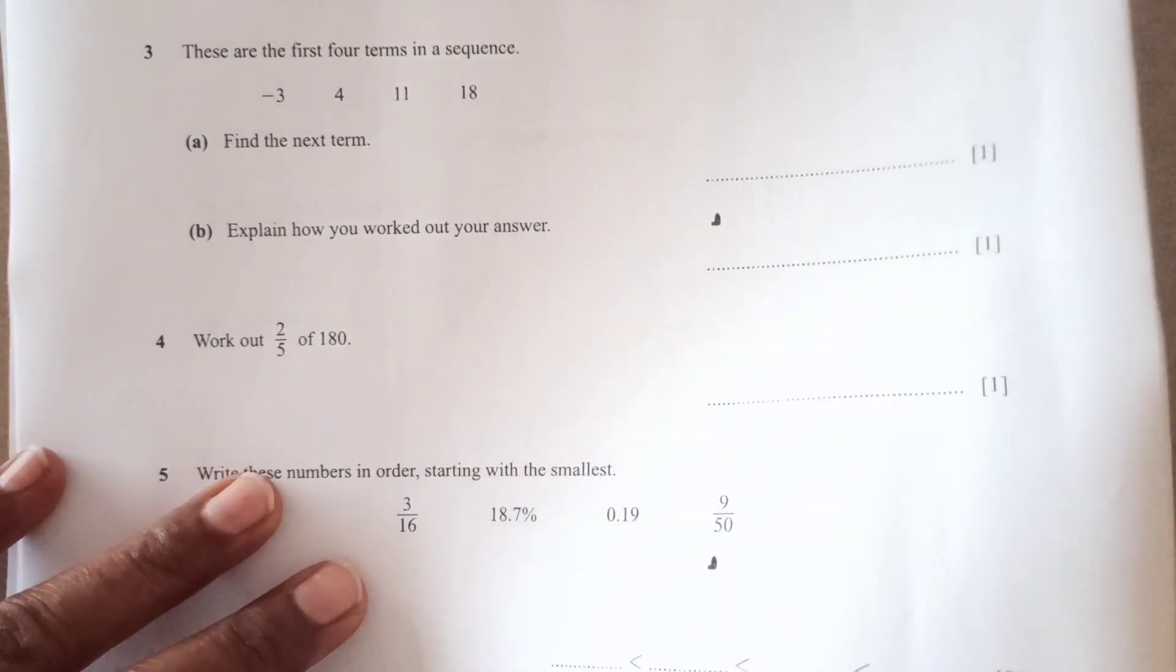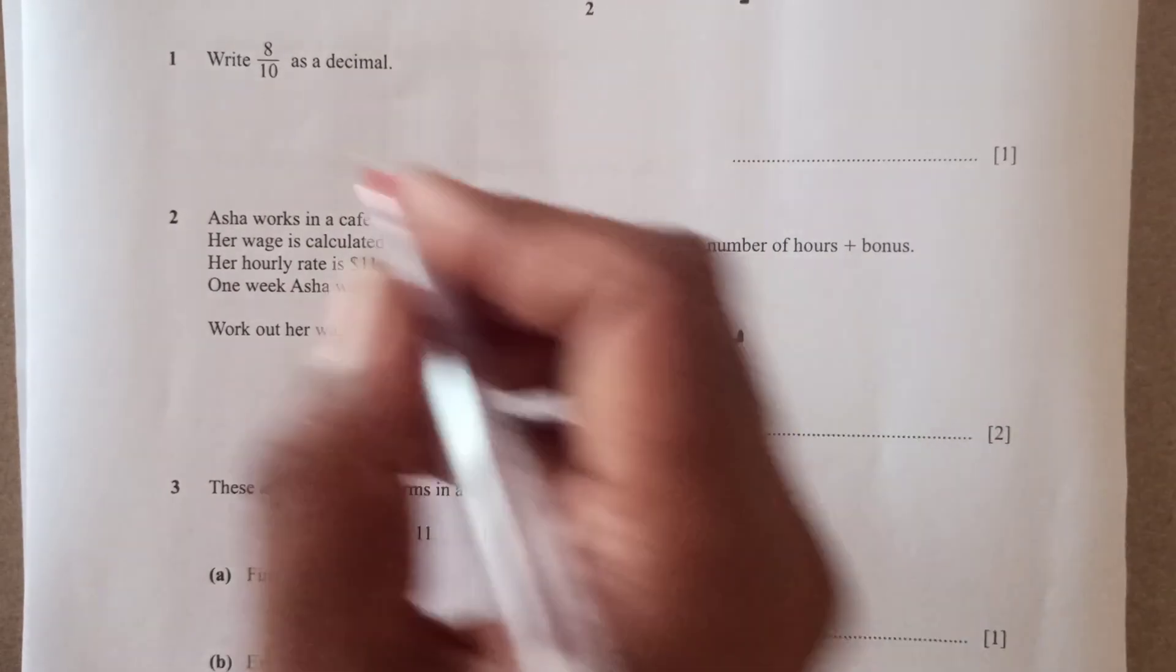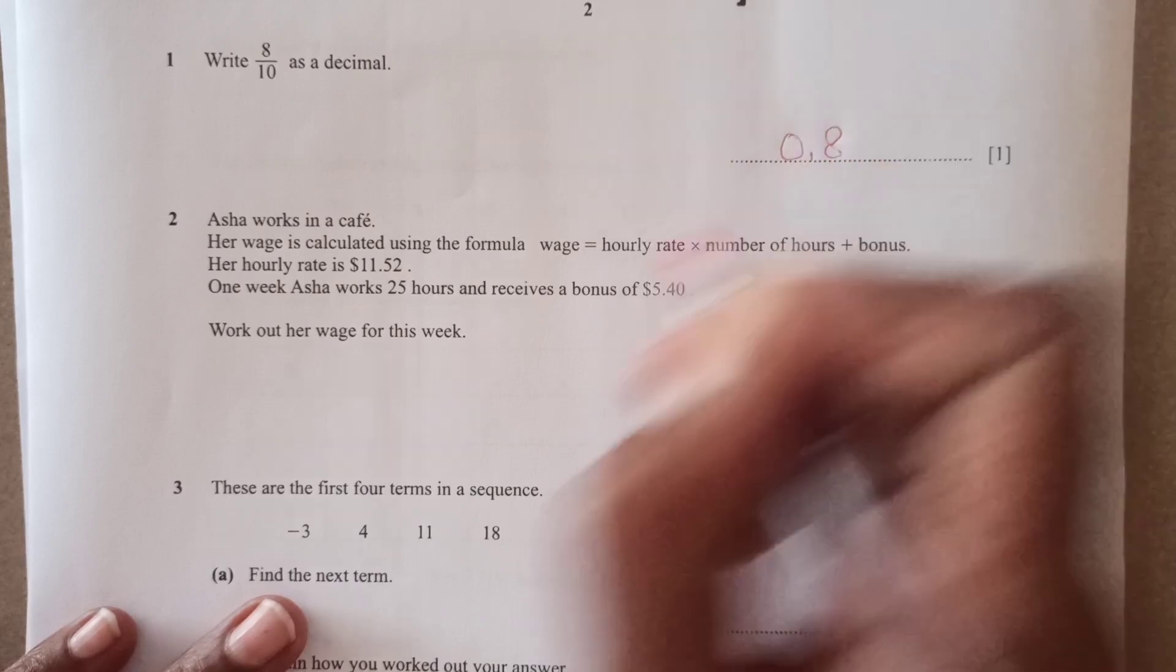Question number 1 that I have here, write 8 over 10 as a decimal. So 8 over 10 as a decimal will be 0.8, right.